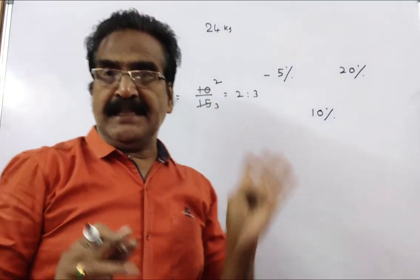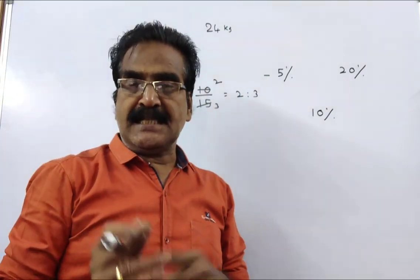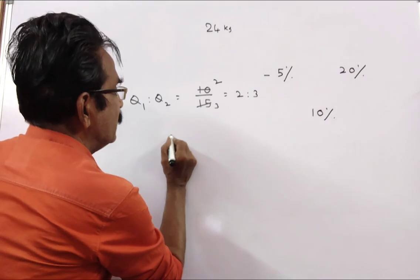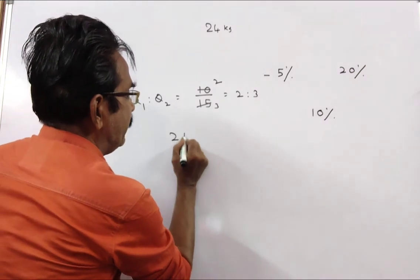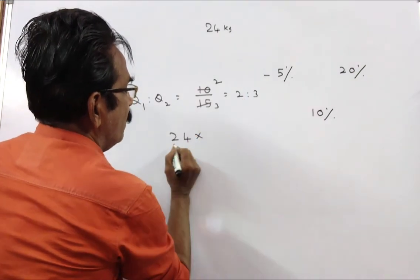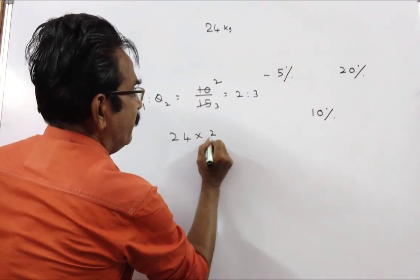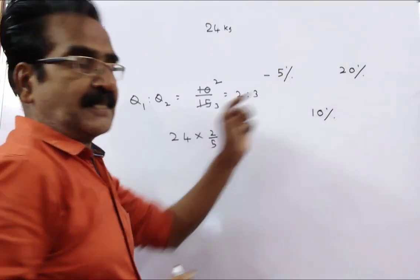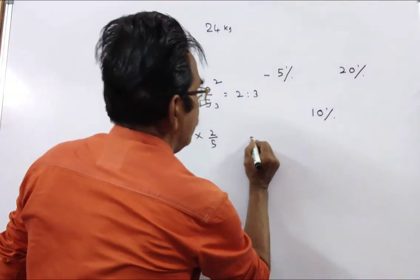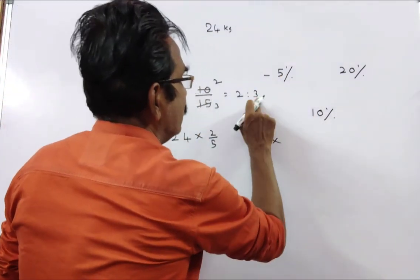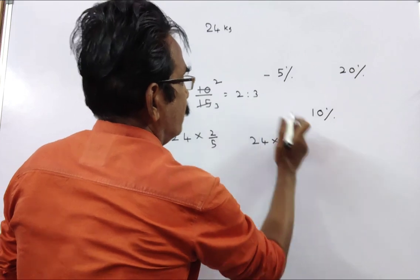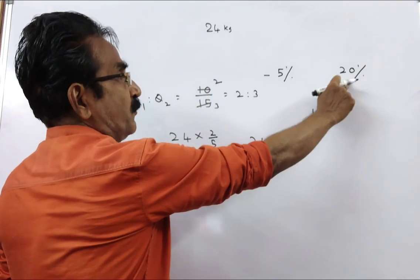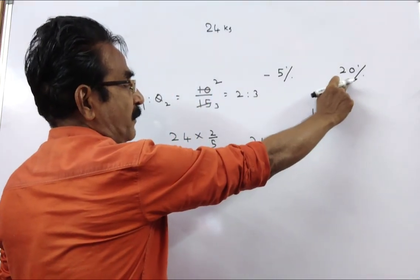Now we have to divide 24 kg in the ratio 2 is to 3. So, 24 × 2/5 — this is the quantity sold at 5% loss — and 24 × 3/5 — this is the quantity sold at 20% profit.